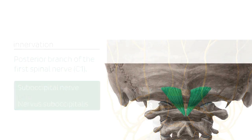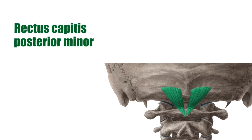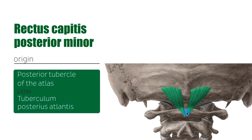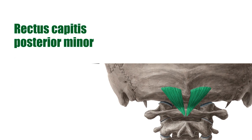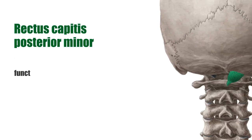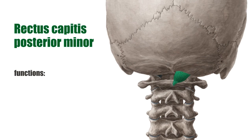Let's start with the very first one on the list — the rectus capitis posterior minor. This one arises by a narrow pointed tendon from the tubercle on the posterior arch of the atlas, the first cervical vertebra. It then inserts on the medial part of the inferior nuchal line of the occipital bone, the surface between it and the foramen magnum, and also takes some attachment to the spinal dura mater. This muscle performs a minor degree of extension of the head at the neck.